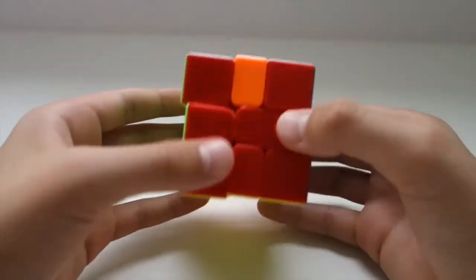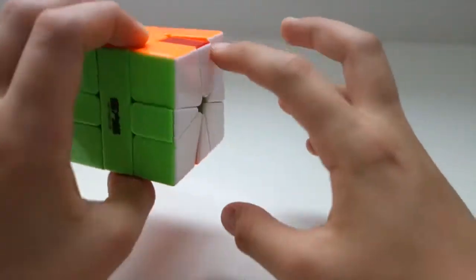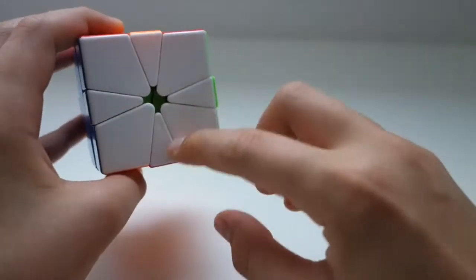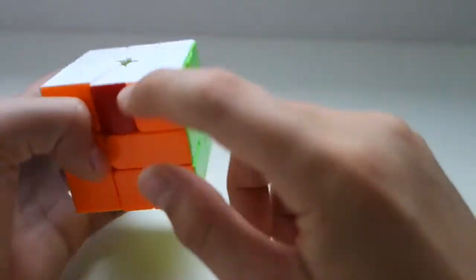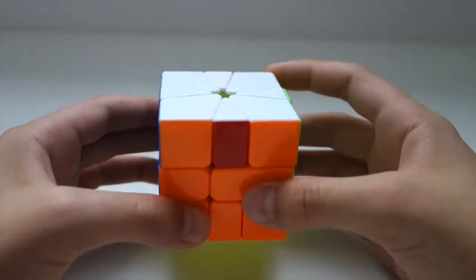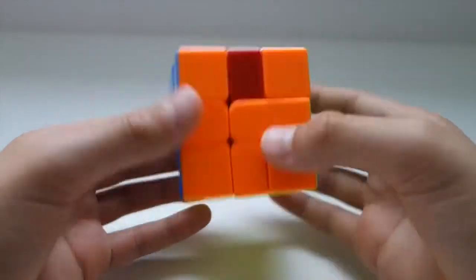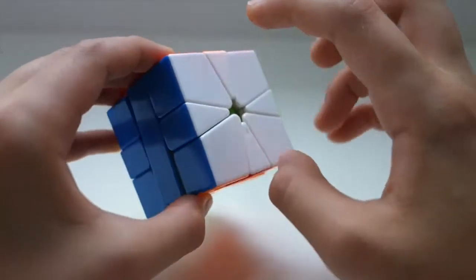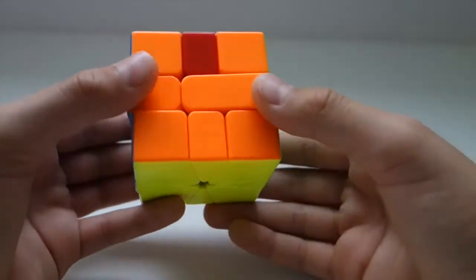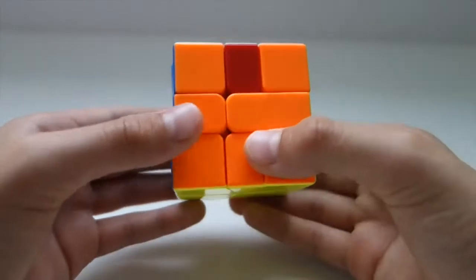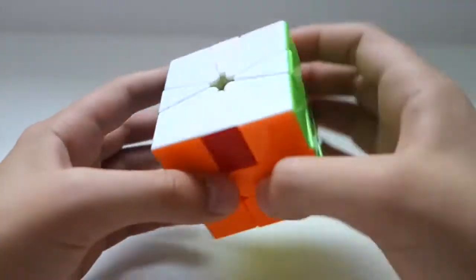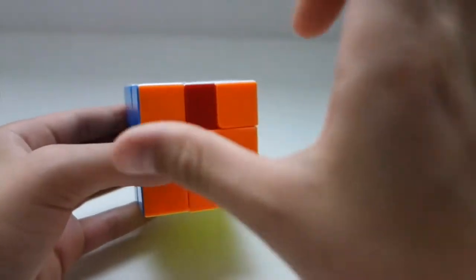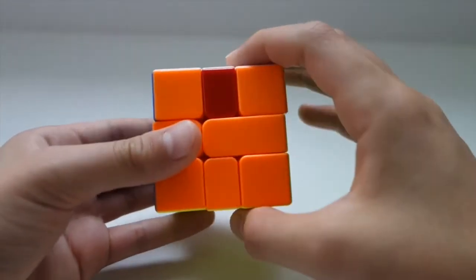This is the second square one parity case, where two edges which are pretty much opposite need to be swapped. Instead of being adjacent to each other or near each other, they are completely opposite. Usually, if you were an intermediate or advanced square one solver, there would be a specific algorithm for this case. But since this is a tutorial for beginners, I'm going to make it easier. On this case, we can use the algorithm that we learned before.